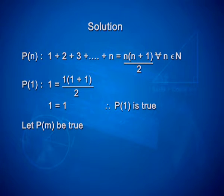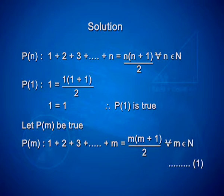Let p of m be true. So p of m can be written as: 1 plus 2 plus 3 plus ... plus m is equal to m into m plus 1 by 2, for every m belonging to N. Take this statement as the first equation.